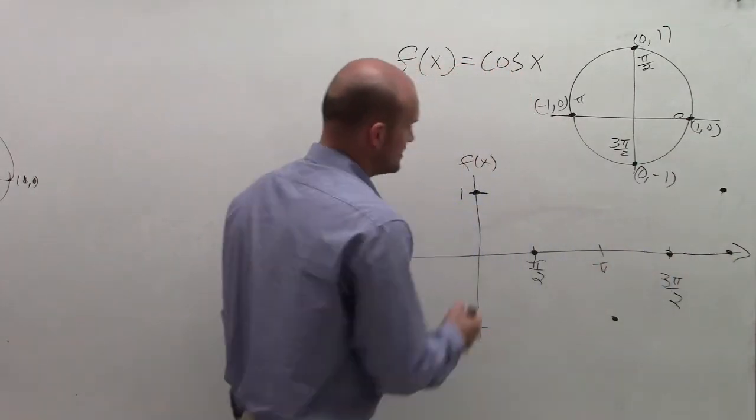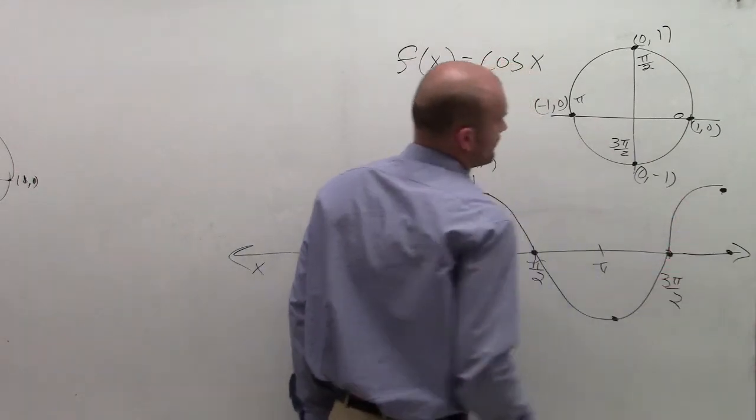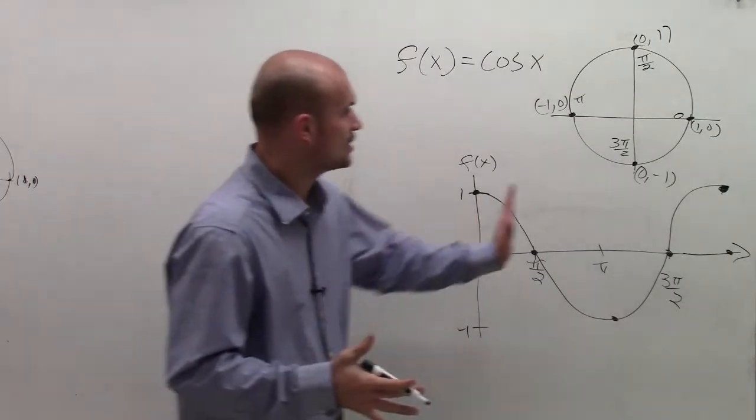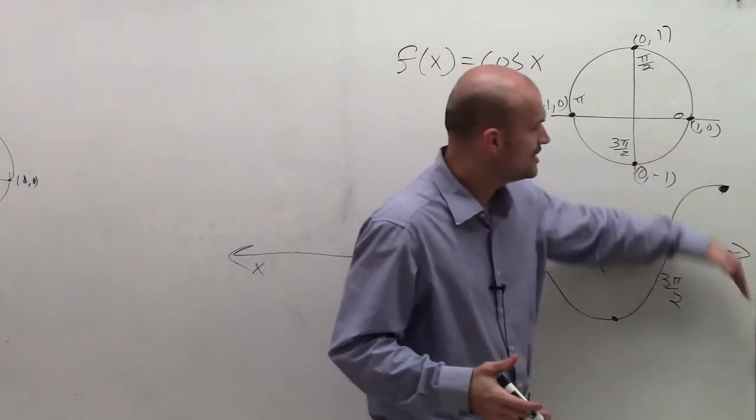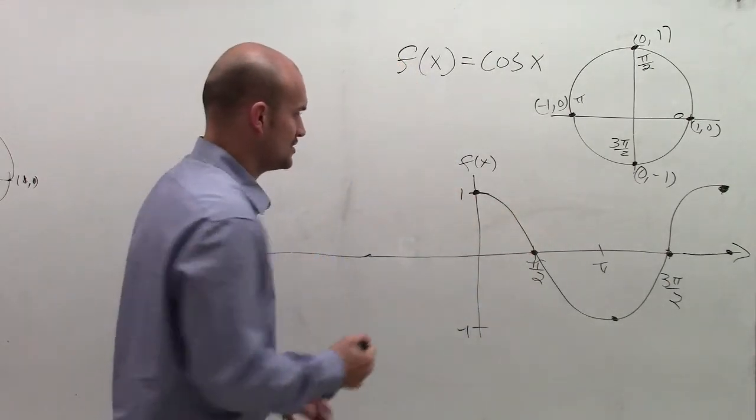So now to connect these points, I'm going to create what we call the cosine curve. Now it's important for this cosine curve, it's also going to continually keep on going back and forth with the exact same pattern. And we can also go in the negative direction.